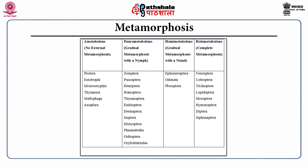Hemimetabolous metamorphosis is a gradual metamorphosis with a larval naiad form; the orders include Ephemeroptera, Odonata and Plecoptera. In the holometabolous form of life cycle, the metamorphosis is complete with larval, pupal and adult forms; the orders include Neuroptera, Coleoptera, Trichoptera, Lepidoptera, Mecoptera, Hymenoptera, Diptera and Siphonaptera.